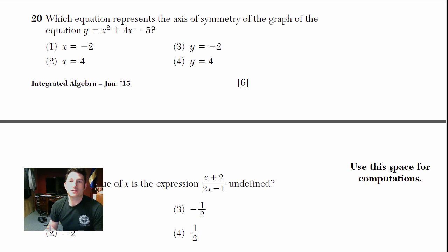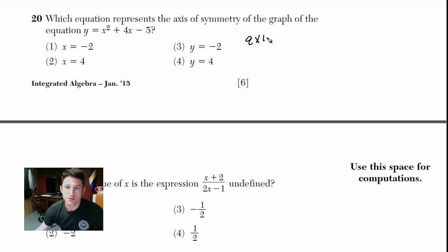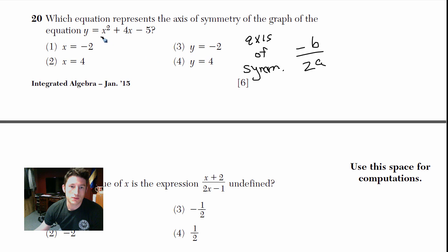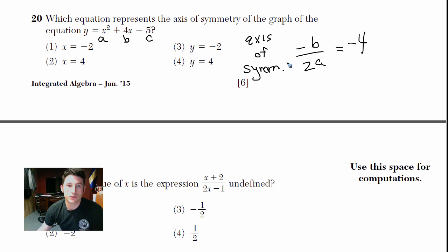Number 20: which equation represents the axis of symmetry? Memorize this formula: axis of symmetry equals negative b over 2a. In the equation, the coefficient in front is your a-value and the next coefficient is your b-value. Here b equals 4, a equals 1 (there's an invisible 1), so it's negative 4 over 2 times 1 — which equals negative 2.